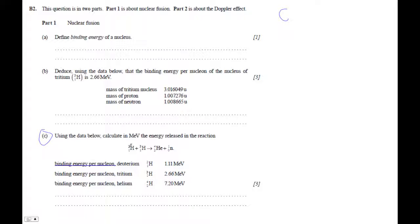So the binding energy per nucleon in deuterium is 1.11. So the total binding energy here would be 2 times 1.11. And then binding energy per nucleon in tritium is 2.66 and there's three nucleons there. Here there's two. These are the nucleons.